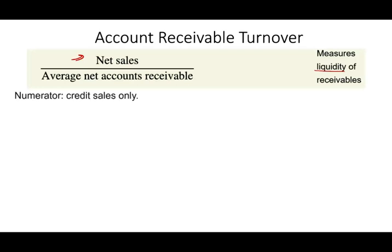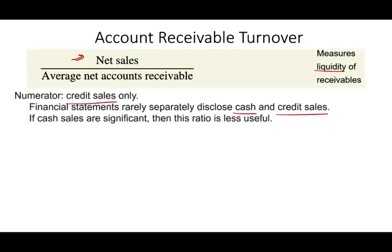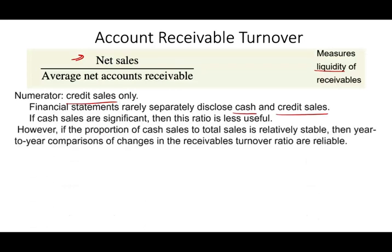The numerator should only have credit sales. In the real world, financial statements for companies don't disclose how much is cash versus credit sales, because it's part of their competitive advantage — they are not required to do so. So if cash is a significant portion of the company's sales, then this ratio is not as helpful. However, if the proportion of cash to total sales is relatively stable, then using this ratio will be a good indicator from year to year.